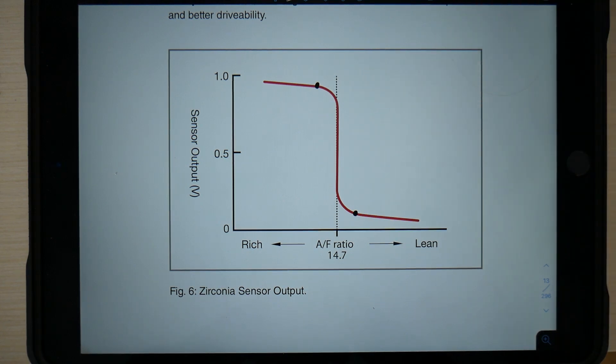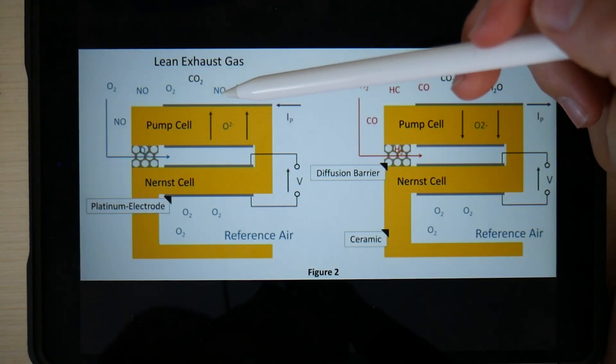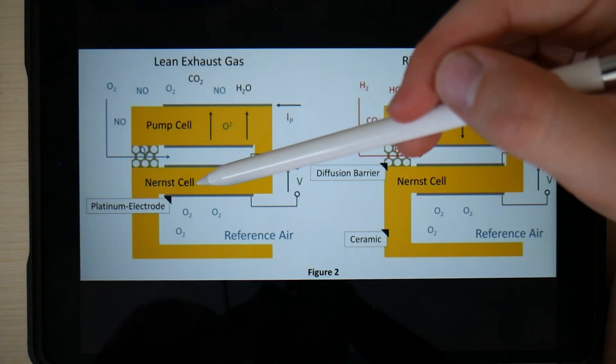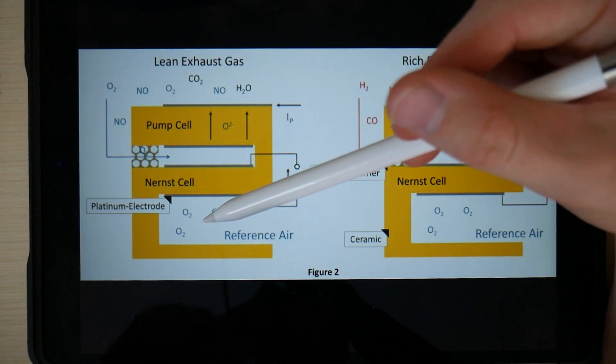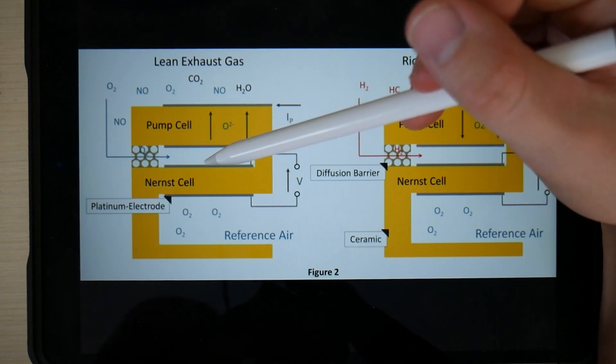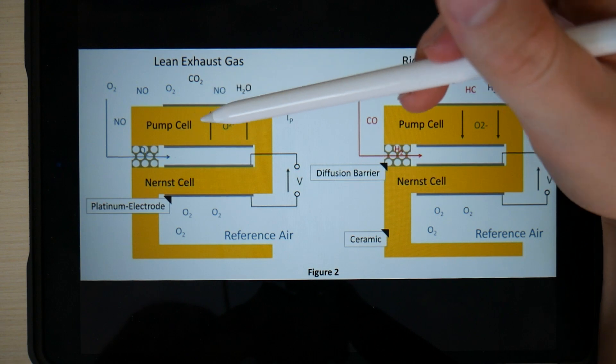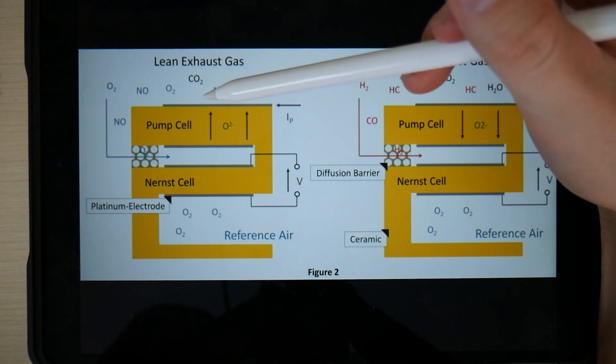That's where the wideband oxygen sensor comes in. How this wideband oxygen sensor works is it's going to have this Nernst cell, which measures a voltage potential depending on the oxygen concentration between the reference air and the exhaust air that is going into this small test chamber. And then we also have a pump cell, which can pump oxygen ions either into this test chamber or back out into the exhaust stream.